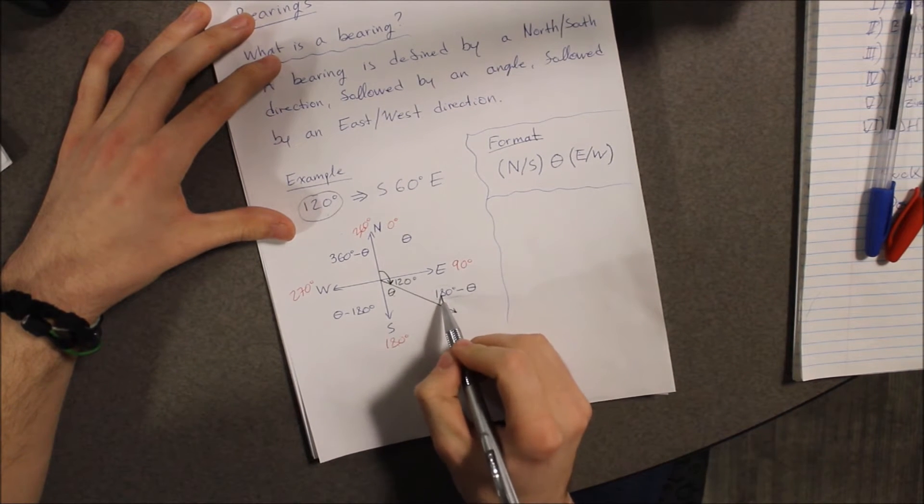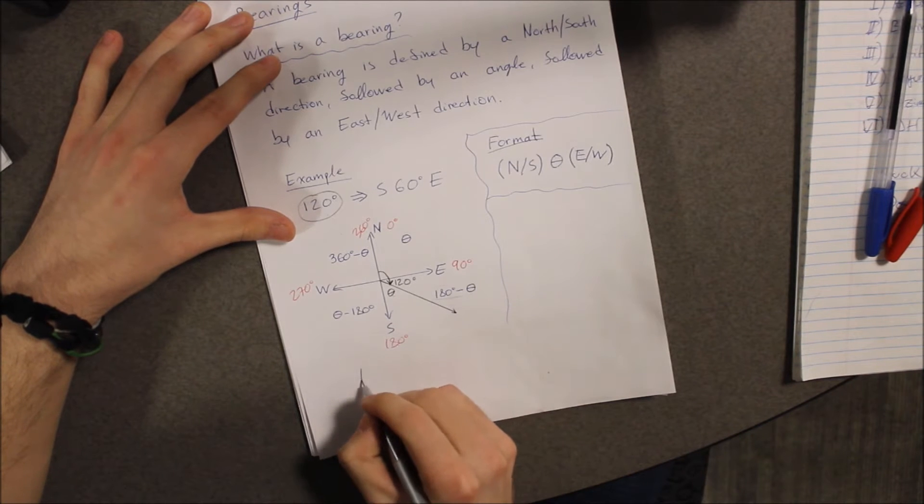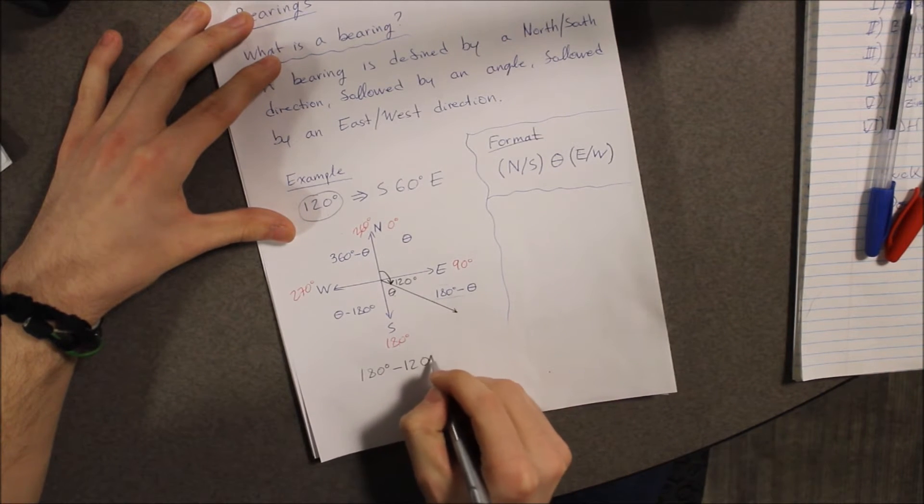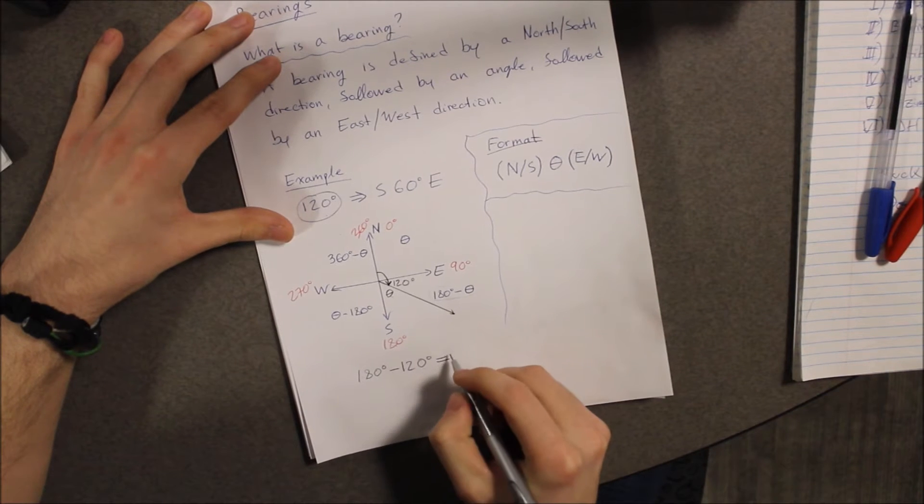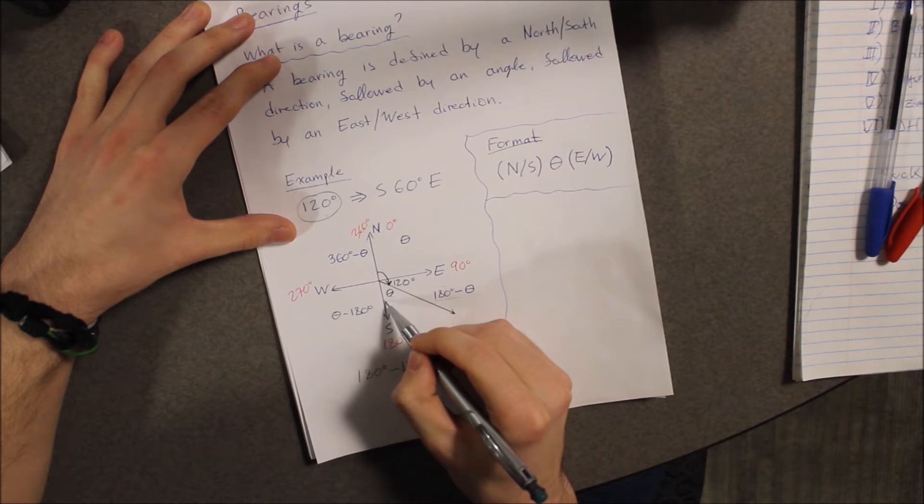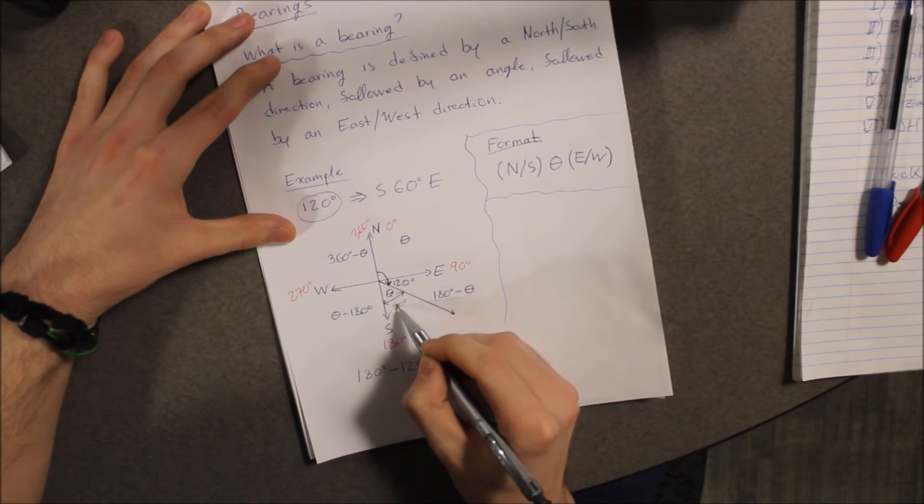So let's take this right here, because we are in this quadrant. 180 degrees minus 120 degrees is the equivalent of 60 degrees. Therefore, this space right here is, in fact, 60 degrees.